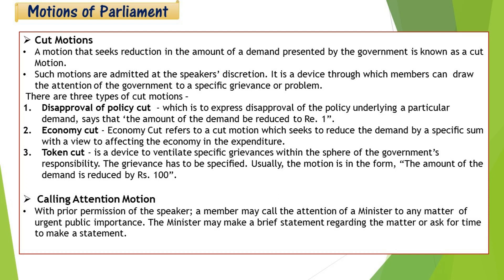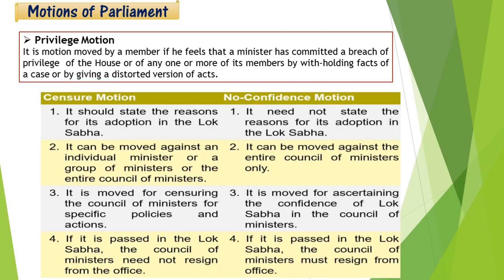Now we talk about the Calling Attention Motion. With prior permission of the Speaker, a member may call the attention of a minister to any matter of public importance. The minister may take a brief statement regarding the matter or ask for time to make a statement — permission is taken from the Speaker, and the member says that the minister's attention is needed on a matter of public importance, so the minister either gives a brief statement right away or takes time to answer. Now we talk about Privilege Motion. If a member of Parliament feels that false facts are being presented in the session, they use a Privilege Motion and raise a breach of privilege proposal in the Parliament session.